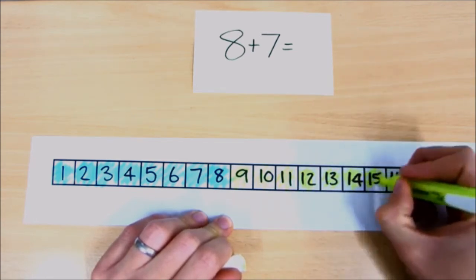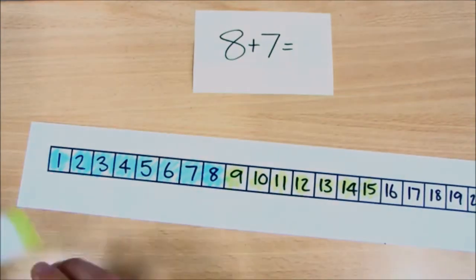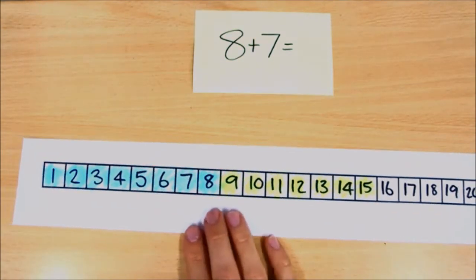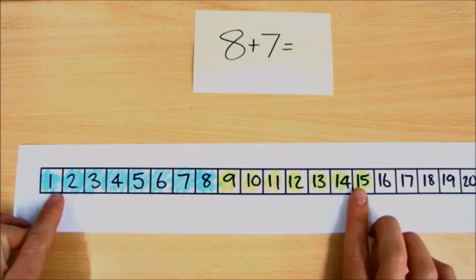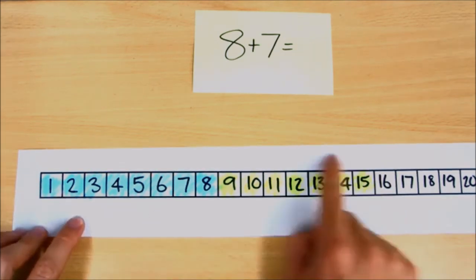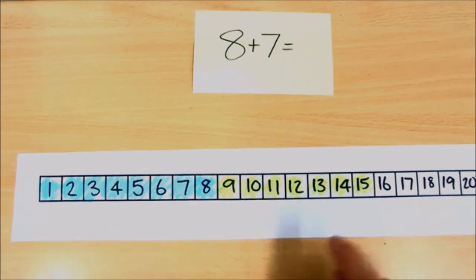And you can see that we actually don't need to count how many there are all together really, because we've colored in from one to fifteen. So we know that we've colored in fifteen all together. So we know that eight add seven equals fifteen.